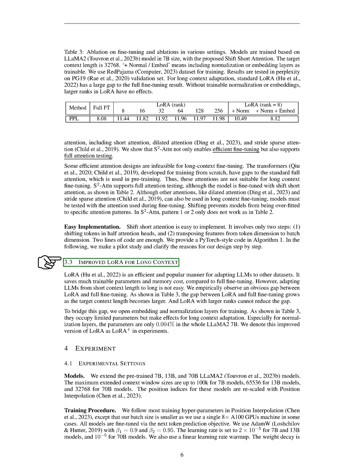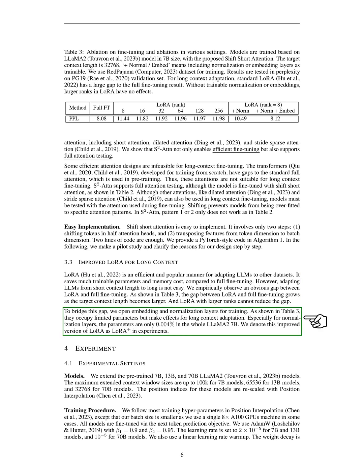We also improved LoRA for long context. LoRA is an efficient and popular method for adapting language models to other datasets, saving a lot of trainable parameters and memory cost compared to full fine-tuning. However, adapting language models from short context length to long is not easy. We observed a significant gap between LoRA and full fine-tuning, and this gap grows as the target context length becomes larger. To bridge this gap, we opened embedding and normalization layers for training — these layers occupy limited parameters but make a significant impact on long context adaptation.